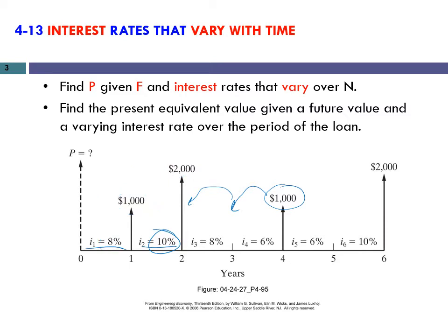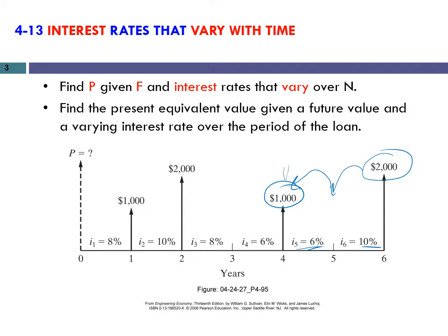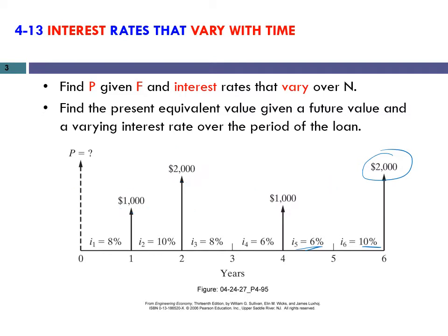Instead, what we can do is start from the last cash flow, move it forward one period with 10% interest, then move it one period backward with 6% interest rate, and then combine it with the cash flow at year four since they are now at the same time. Then move those two together backward to year three, combine with the next cash flow, and continue all the way to the present time.